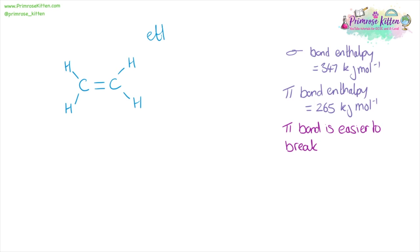Here we have ethene, our simplest alkene, and I'm going to use this as a starting point for explaining all of the different reactions. Then I'm going to show you the mechanism and more complicated reactions. We should know that the double bond is made up of a sigma bond and a pi bond. From experimental data, a sigma bond has a bond enthalpy of 347 kilojoules per mole, and a pi bond has a bond enthalpy of 265 kilojoules per mole, meaning that this double bond is easier to break than single bonds.